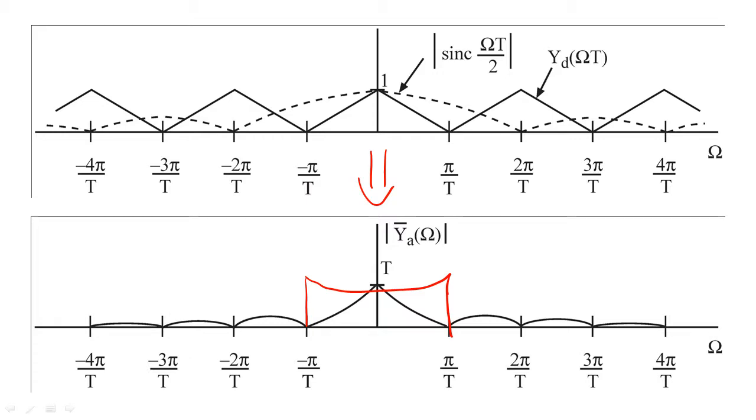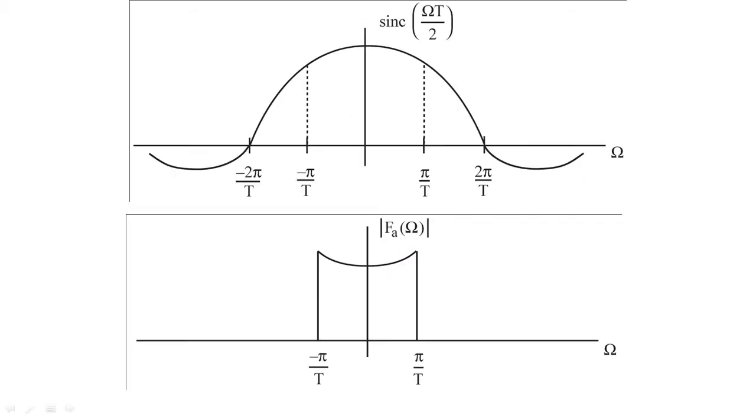So based on the shape of the sinc function, we can qualitatively see that f sub a of omega needs to be a low-pass filter, with cutoff frequency pi over t, and that also slightly emphasizes the higher frequencies to undo the scaling caused by the sinc function.